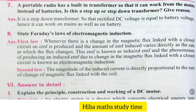Seventh question: A portable radio has a built-in transformer so that it can work from the mains instead of batteries. Is this a step-up or step-down transformer? Give reason. Answer: It is a step-down transformer so that the rectified DC voltage is equal to the battery voltage. Hence, it can work on mains as well as on battery.